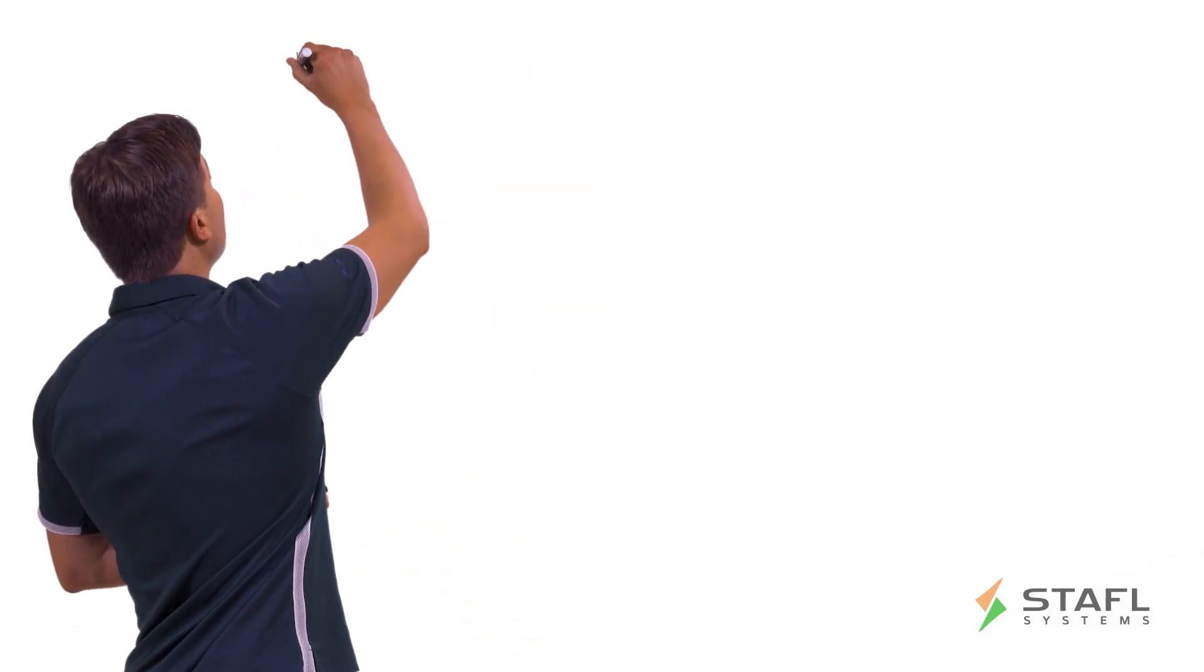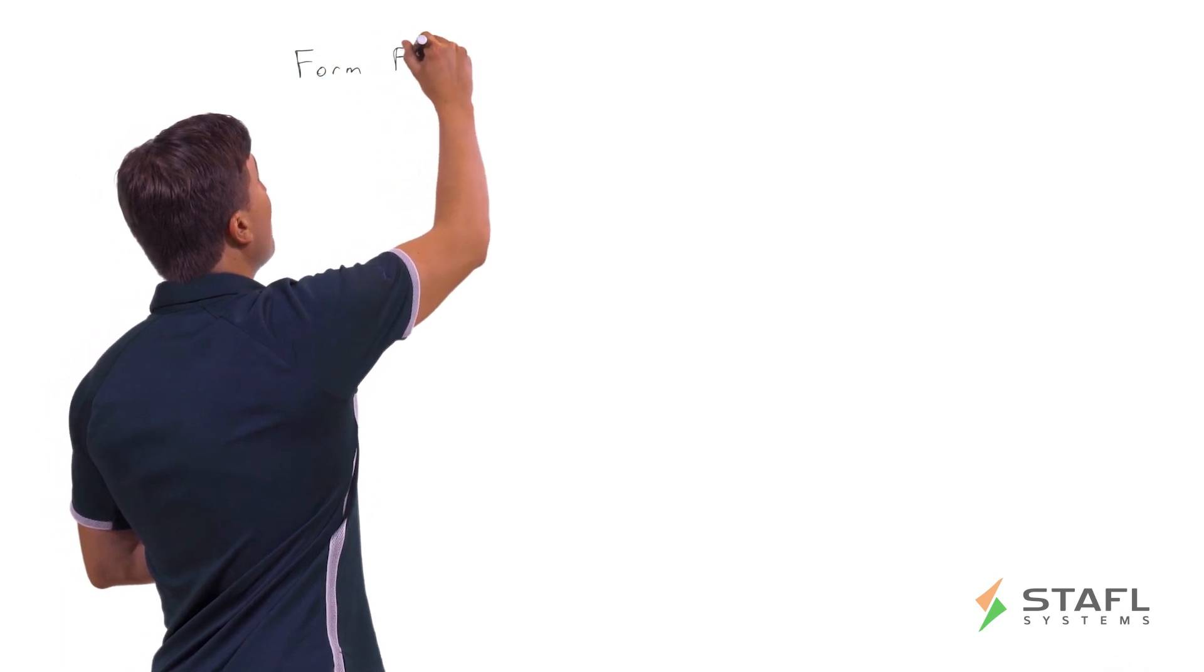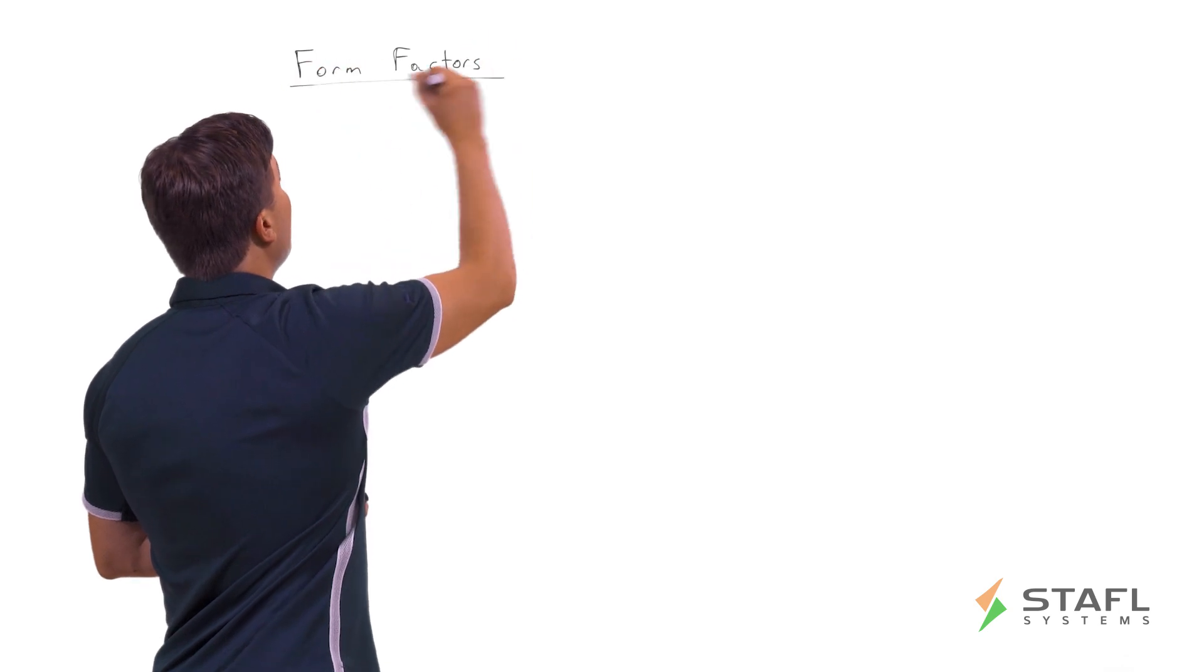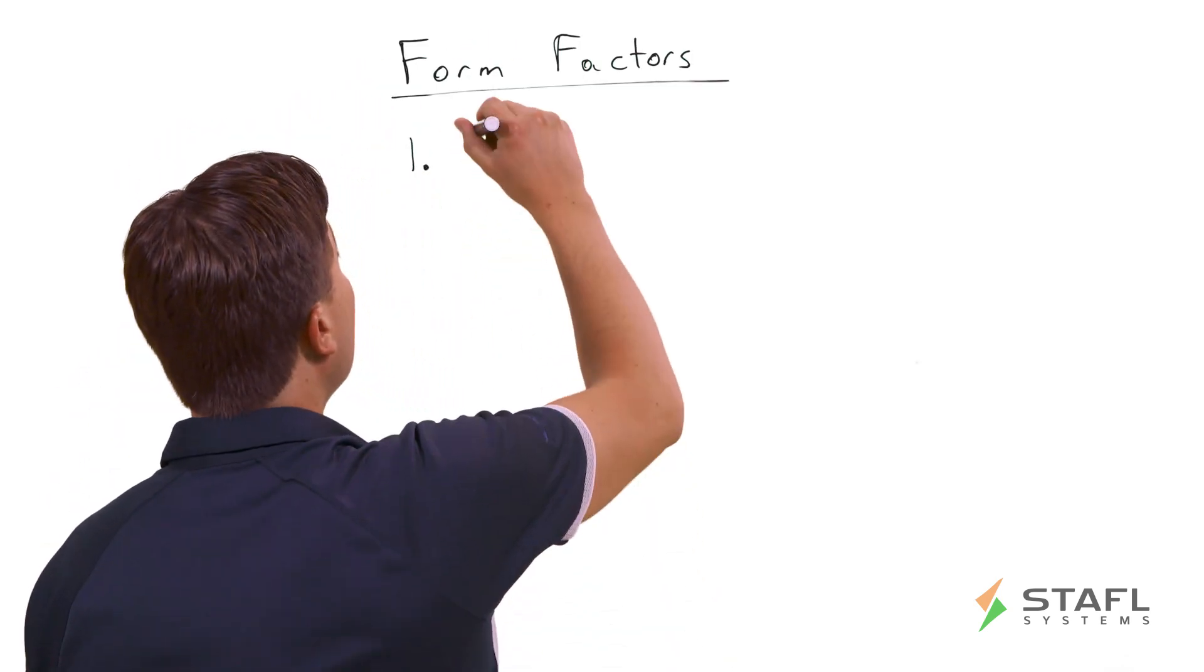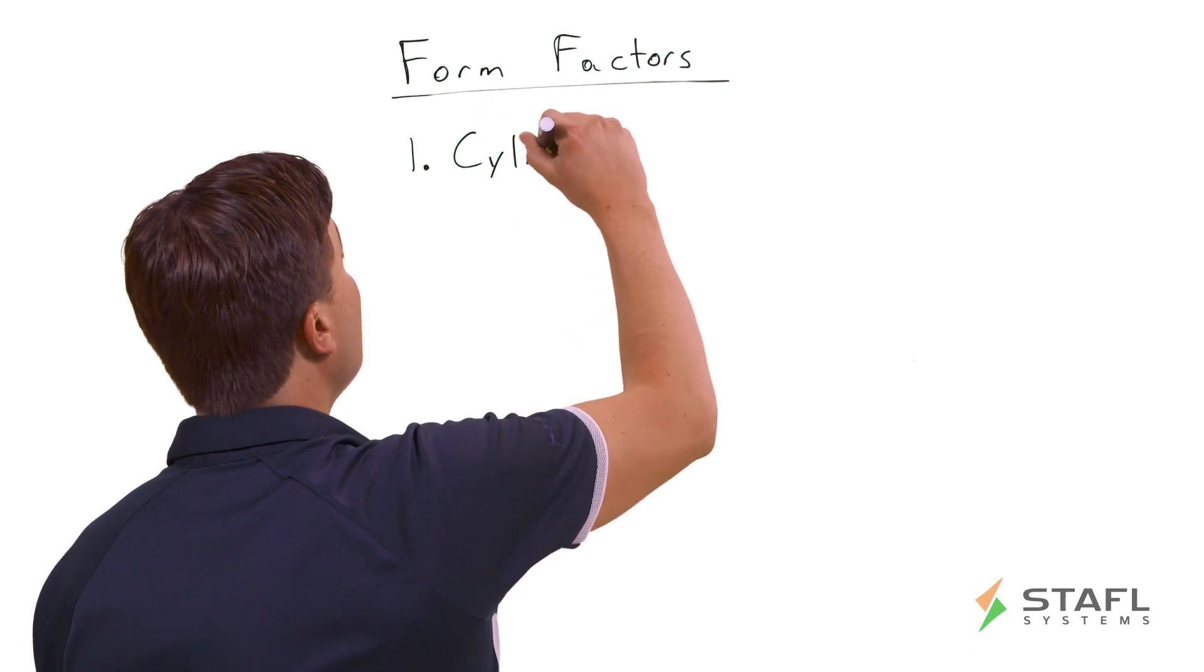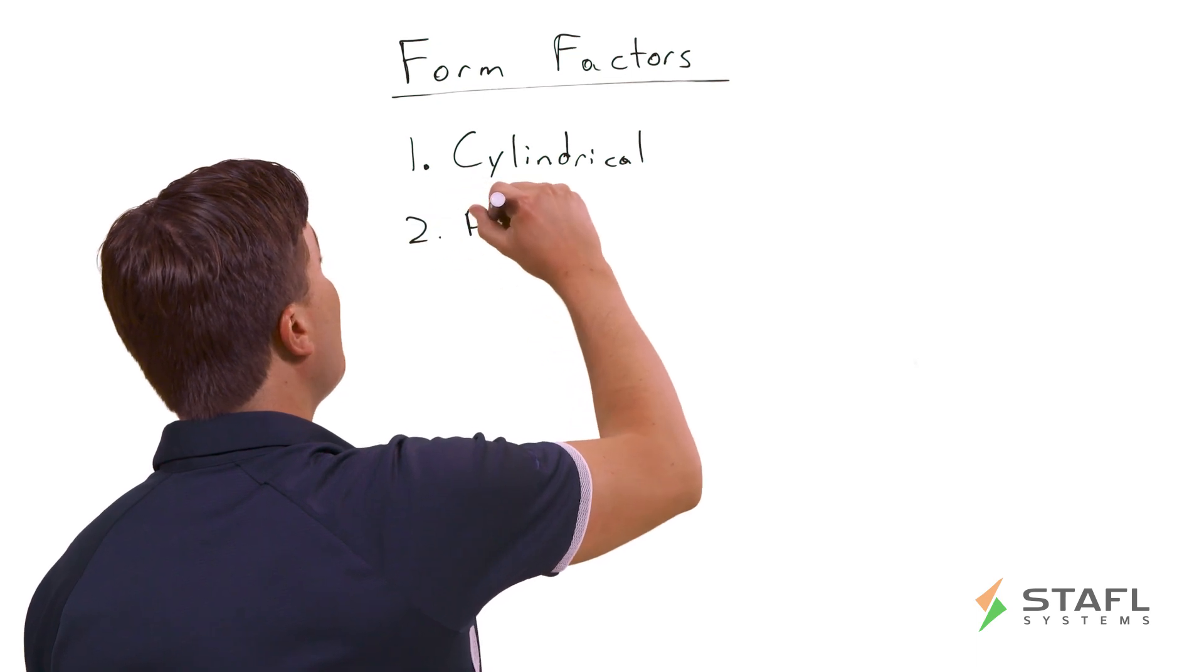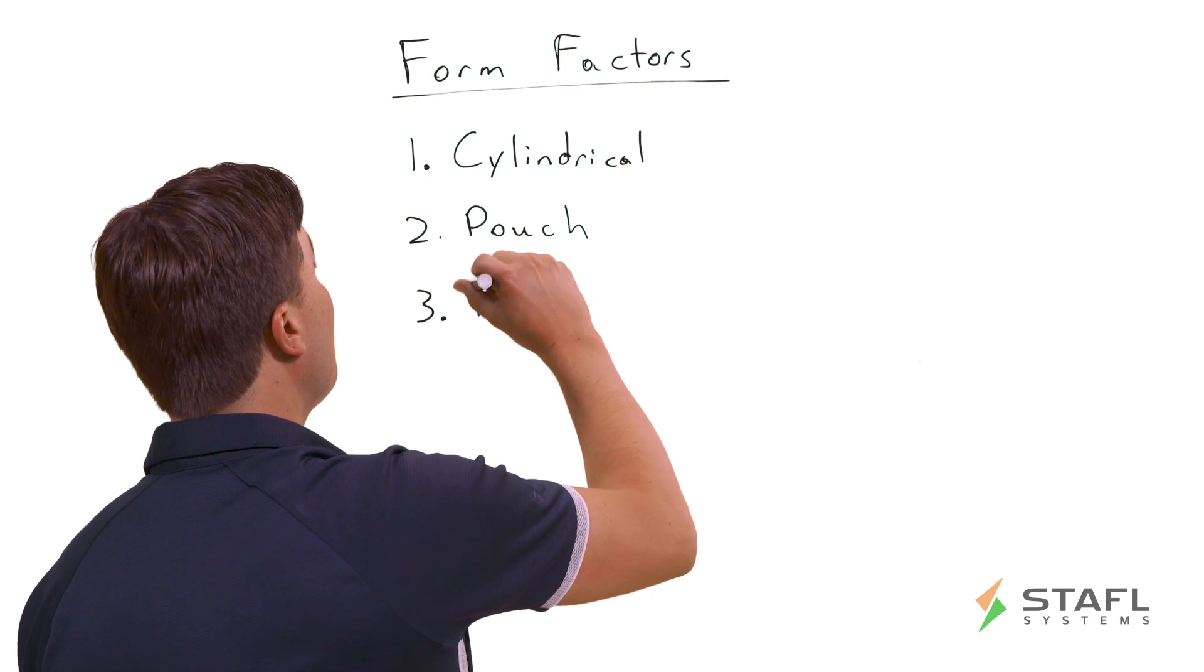So let's start with the form factors that are typically common for lithium-ion cells. There are three primary form factors that you'll see in the industry today. The first is cylindrical, the second is pouch, and the third is prismatic.